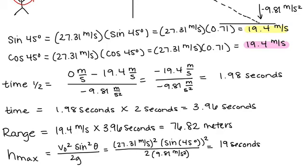For H max, we took 27.31 squared, multiply that by sine of 45 squared, and then divide that by 2 times 9.81 meters per second squared, and you end up with 19 meters.